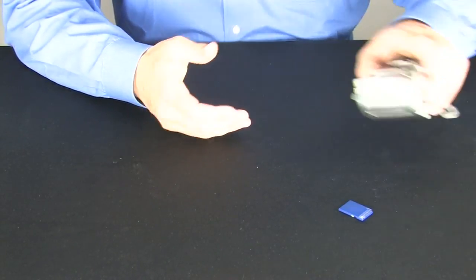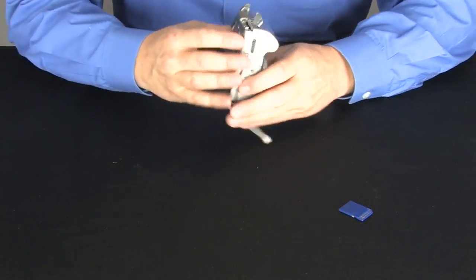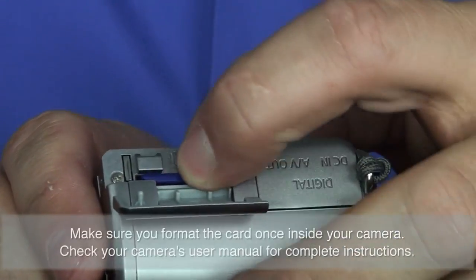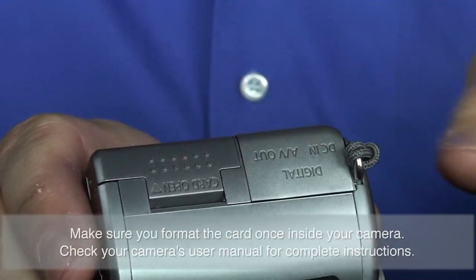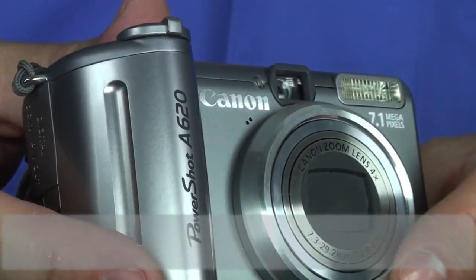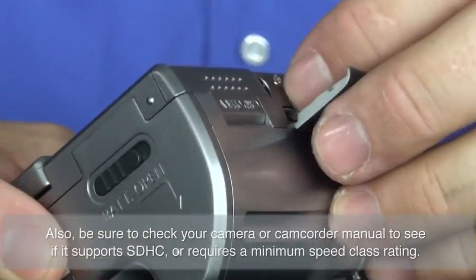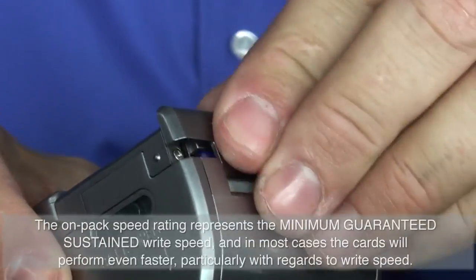Next up is a still camera. We have a couple still cameras here that we use. Take the card, put it in this slot there, close it up, and start taking pictures. When you're done taking pictures, you don't actually have to use the camera's port here to plug it in. You can just take the card out of the camera right here.